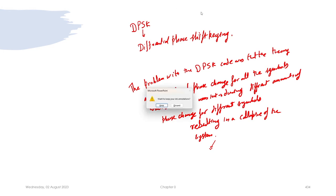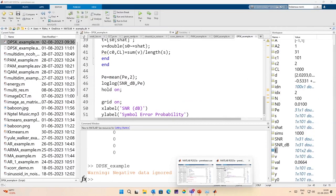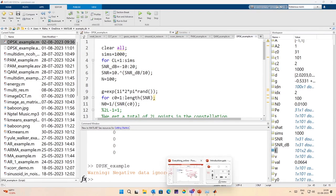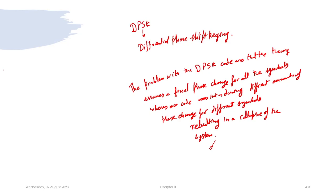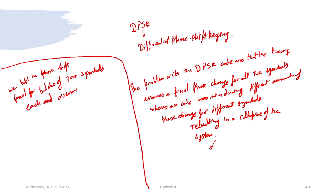We could not detect anything, so we changed the code slightly. There is a gap between the two parts of this video, but nonetheless we changed the code slightly. What we did — I will just do this in PowerPoint as that will be easier — we kept the phase shift fixed for 100 symbols each and averaged over 1000 such batches.